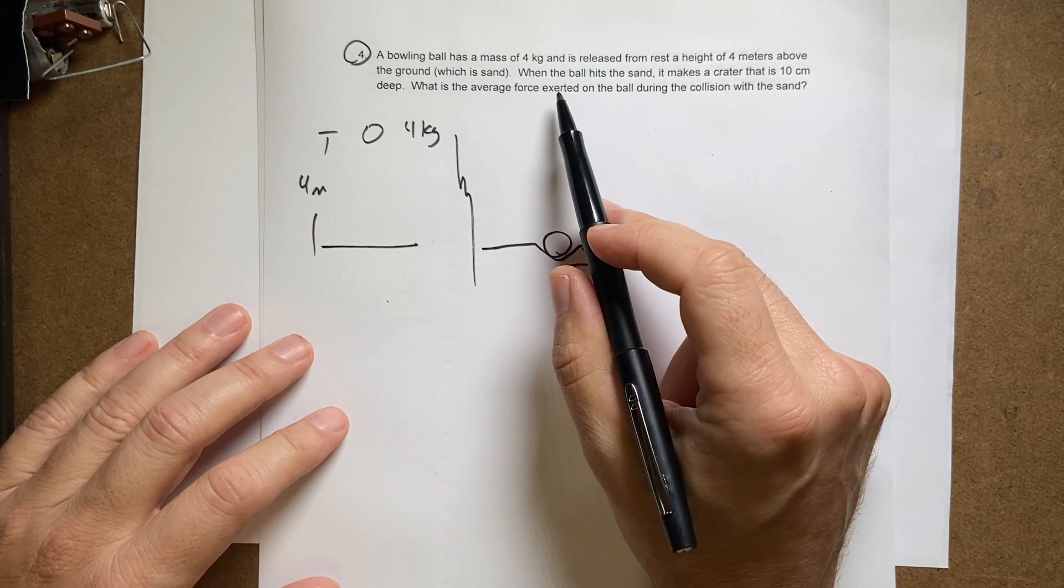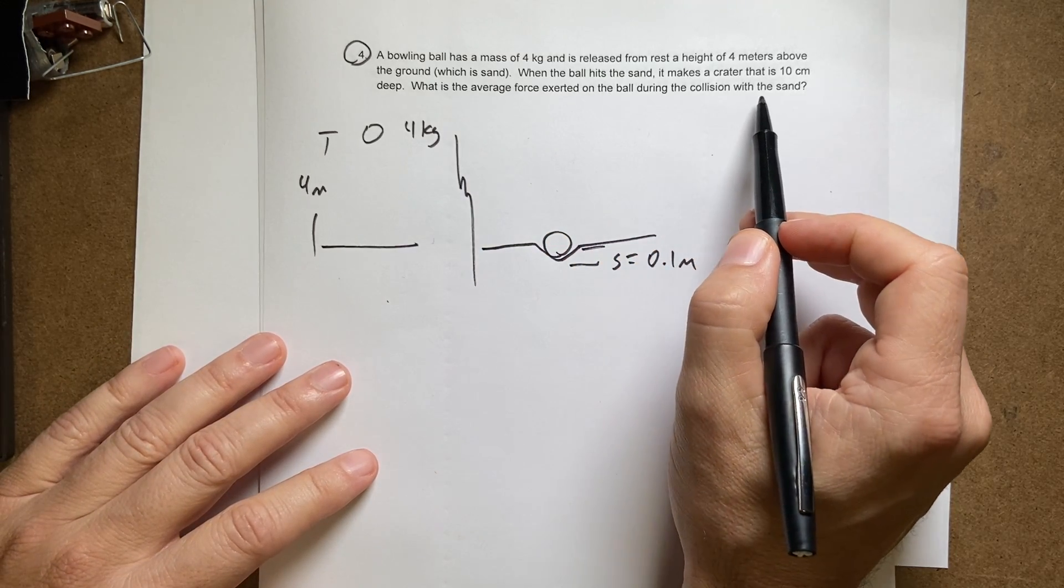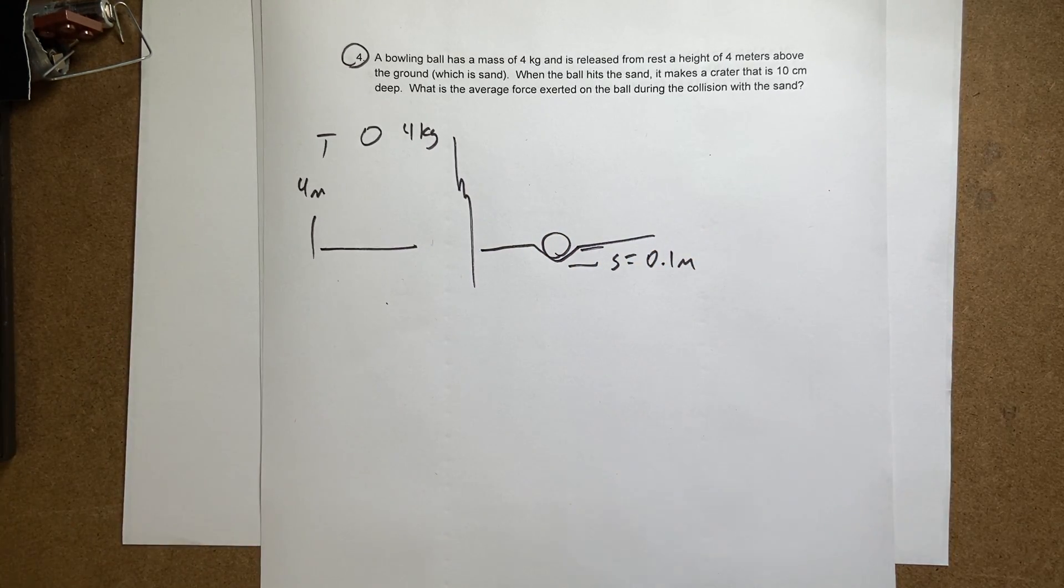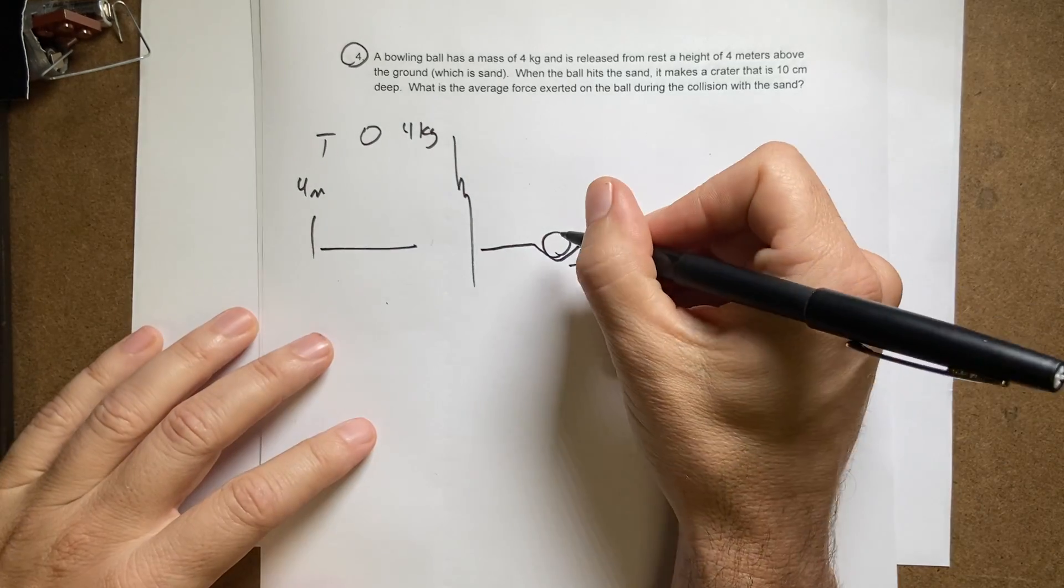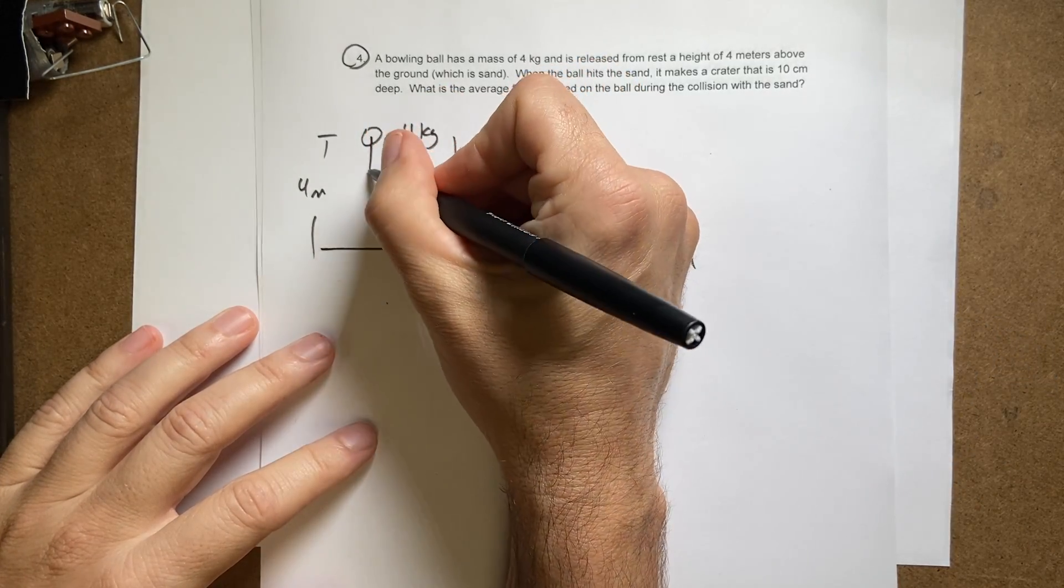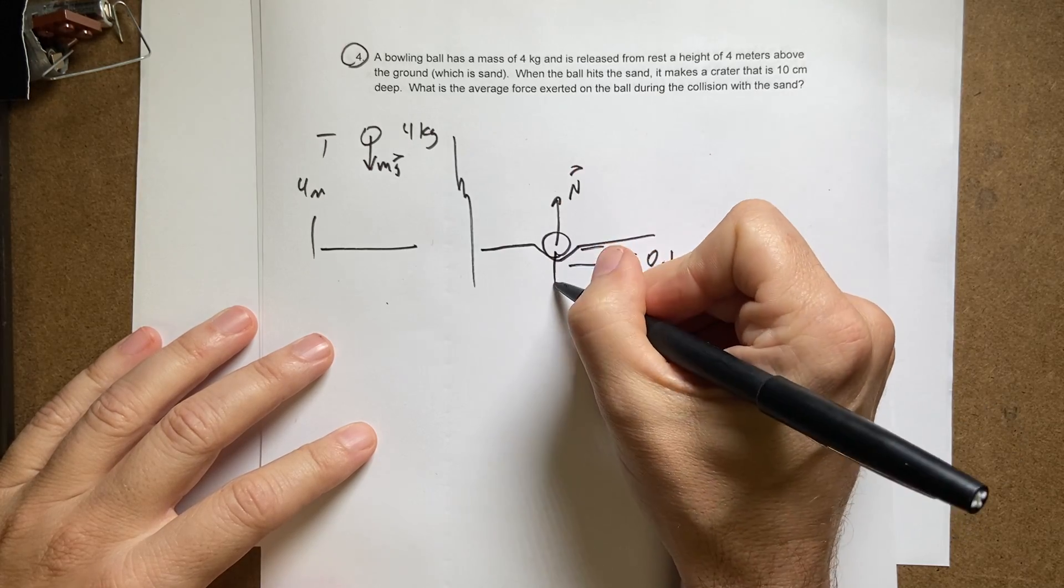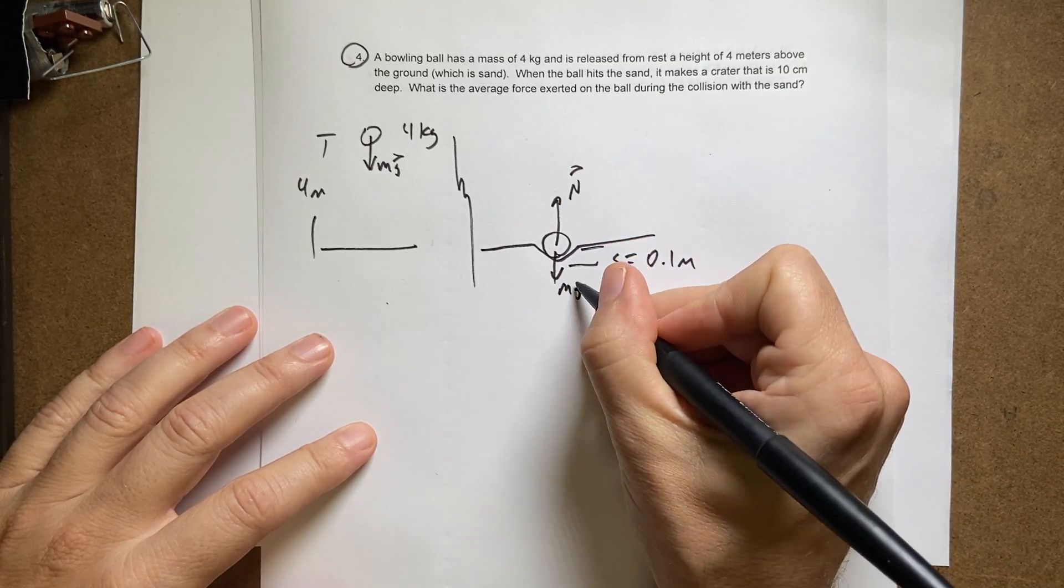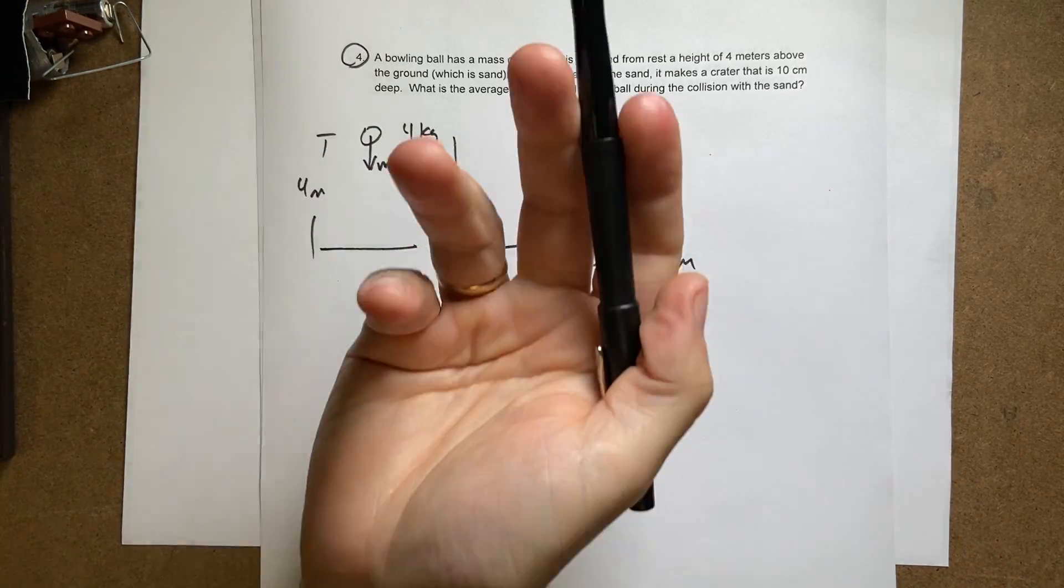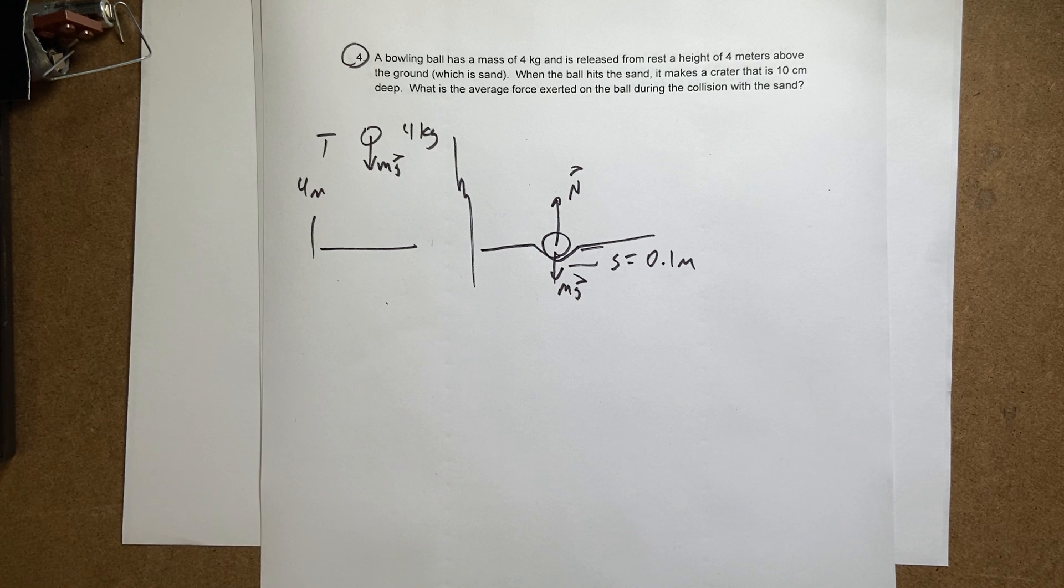What is the average force exerted on the ball during the collision with the sand? So in this case, we have to think there's clearly a force pulling down, and then there's a force pushing up which are not equal during the collision. And that upward pushing sand force, which I'm calling a normal force, is what slows the ball down. And I want to find that.